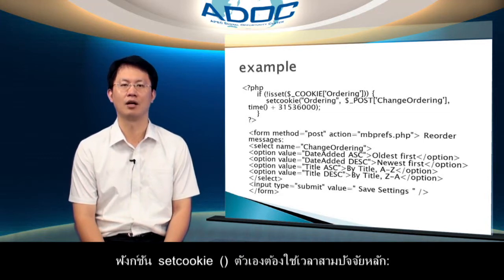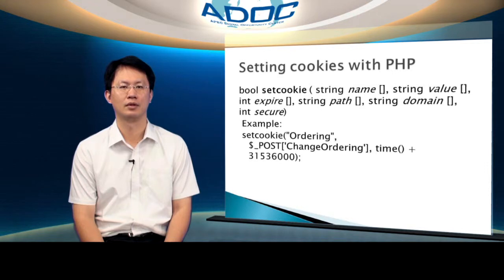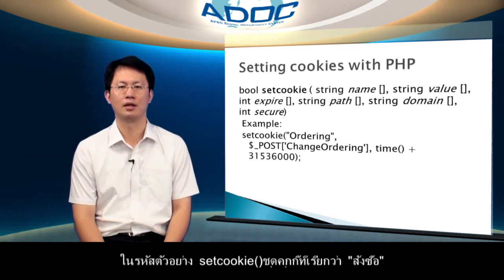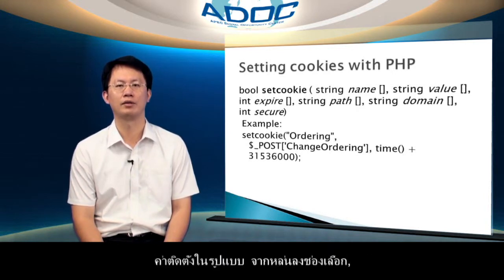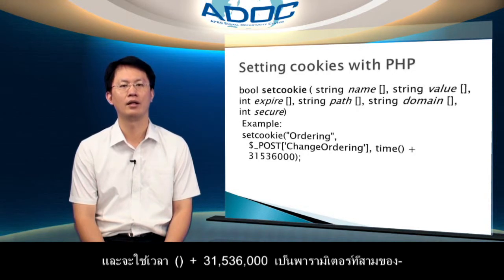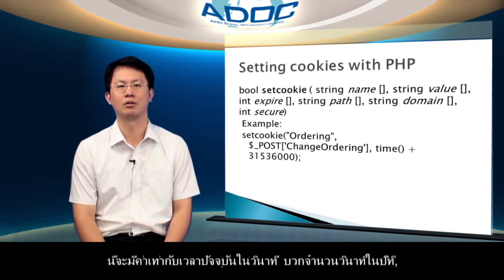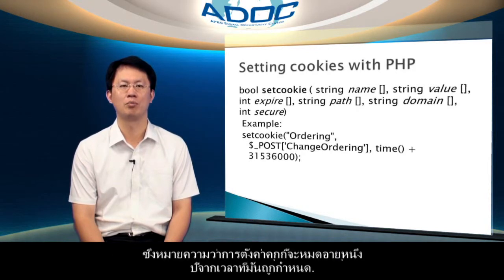The setCookie function itself takes three main parameters: the name of the cookie, the value of the cookie, and the date the cookie should expire. In the example code, setCookie sets a cookie called 'ordering' to the value set in the form from the drop-down select box. It uses time() plus 31,536,000 as its third parameter, which is equal to the current time in seconds plus the number of seconds in a year, meaning the cookie is set to expire one year from the time it was set.